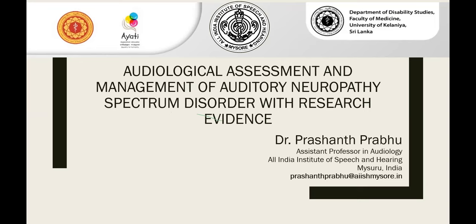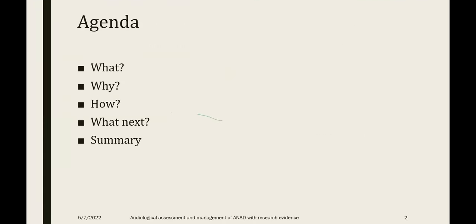Thank you for joining in, as it's early — around 9 to 10 — and all of you have joined in. The agenda for today: we'll start with what is auditory neuropathy spectrum disorder in brief, why a person can get ANSD, and how we assess it — how we find out that a person has ANSD. Then the second half will include the management options available for individuals with ANSD, and we'll end with a summary including clinical and research insights.